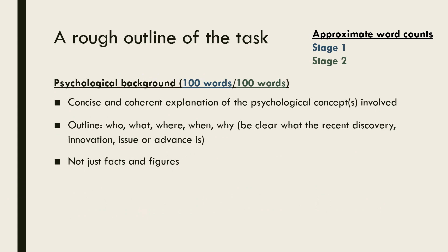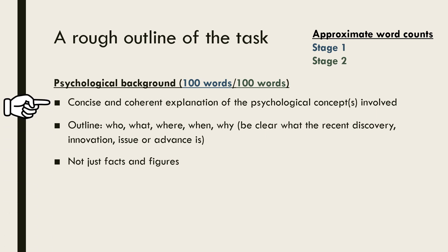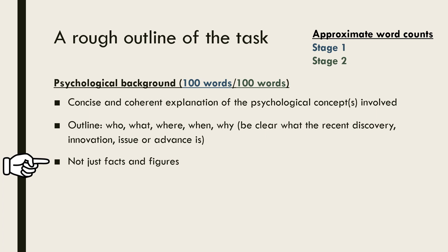After your introduction, you need to provide an explanation of the psychological concepts involved. This section should be concise as it isn't the main focus of the task. You also need to be selective about what is covered here — it doesn't need to be absolutely every bit of background information. Only describe those aspects that are most relevant. It's also important to make sure this section is coherent. Don't just list facts and figures — make sure sentences flow on logically from each other.